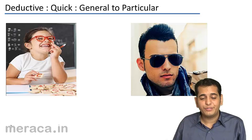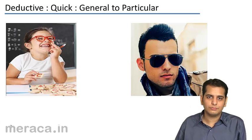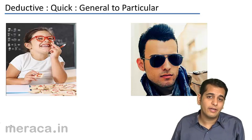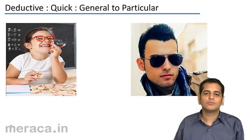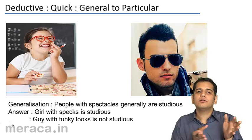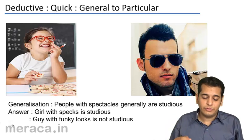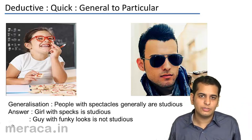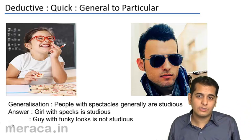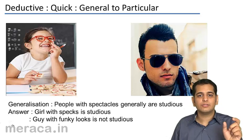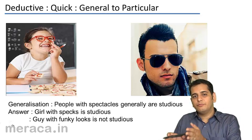Take a close look at these pictures. When you see a girl with spectacles, what do you infer? Correct — that the girl is studious. And when you see a guy with a funky hairstyle, sunglasses, and glammed-up clothes, what do you infer? He's not studious. These are generalizations we draw. We apply them to individual examples: a girl with specs is studious, a guy with funky hair is not.